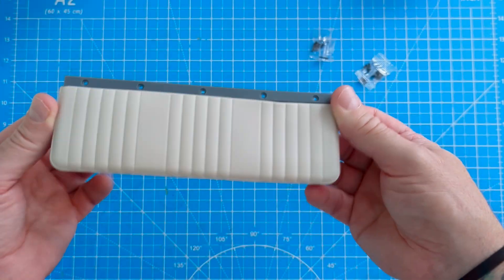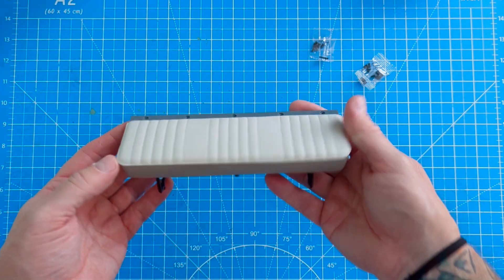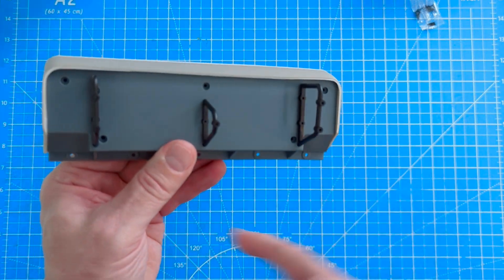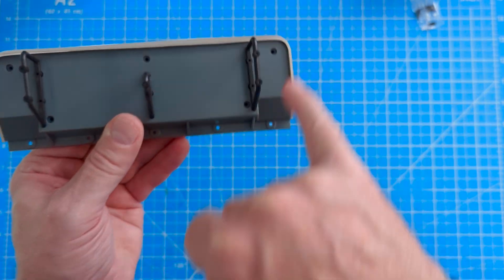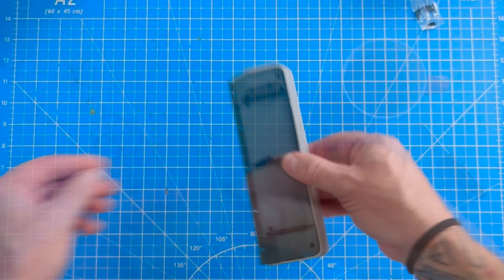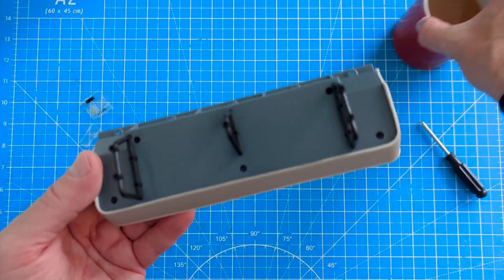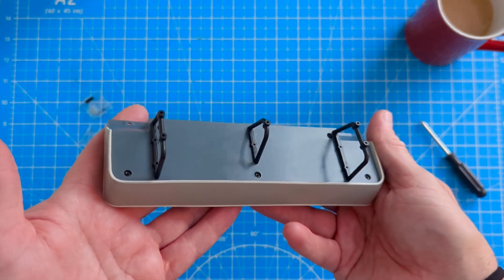And then that's done. That should look like that. Next using the BP04 screws we're just going to secure that base down there, there, there, there and there. Okay so that is all screwed down.